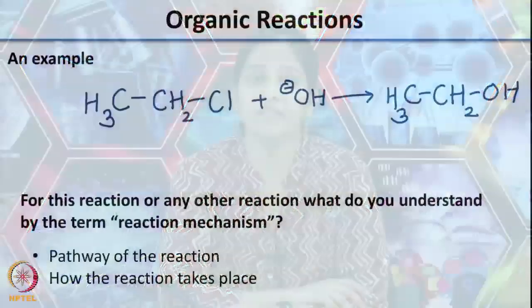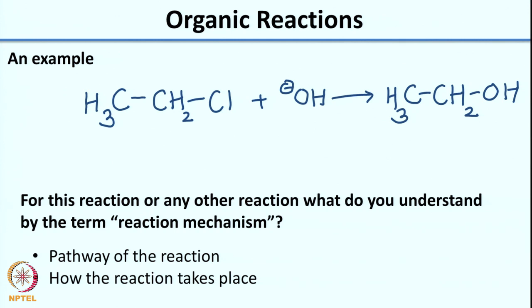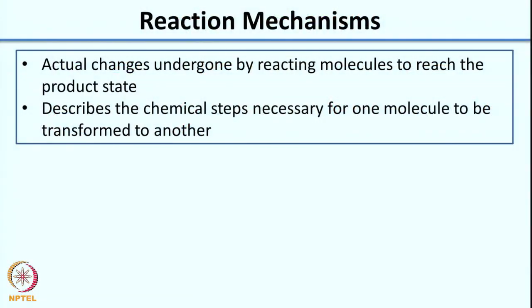When I do this exercise in my classes, some responses I get are: a reaction mechanism describes the pathway of a reaction and tells you how the reaction takes place. More formally, one can define a reaction mechanism as the actual changes undergone by reacting molecules to reach the product state, or the chemical steps necessary for one molecule to be transformed to another.